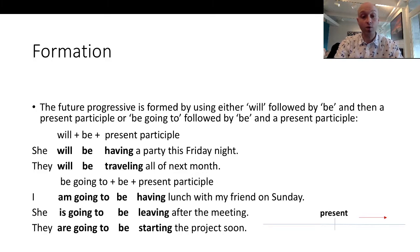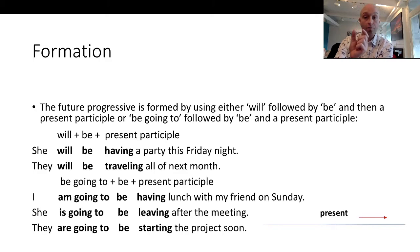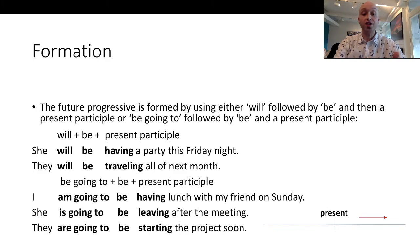The second way is with 'be going to' followed by 'be' followed by a present participle, such as 'I am going to be having lunch with my friend on Sunday,' 'she is going to be leaving after the meeting,' and 'they are going to be starting the project soon.' So these are the two ways you can form sentences in the future progressive.